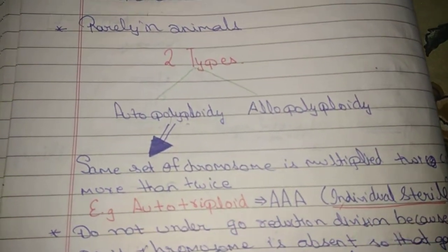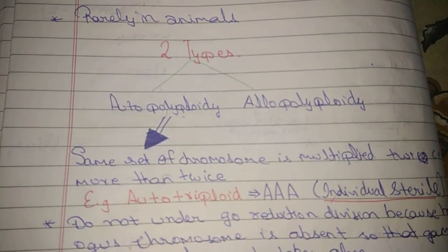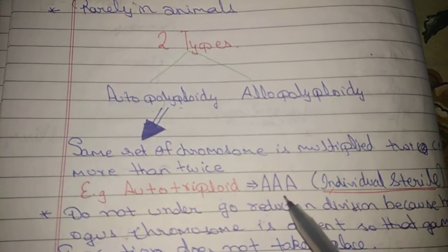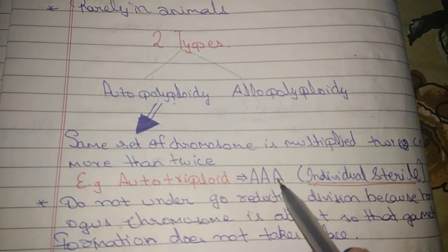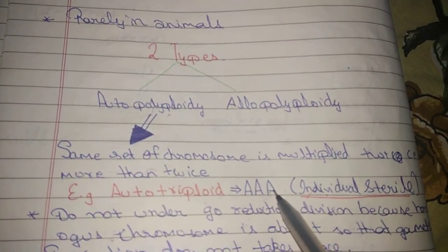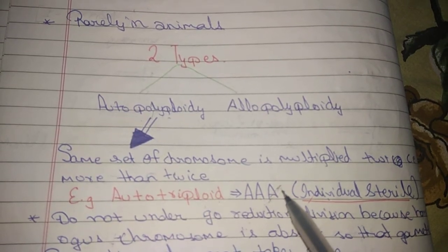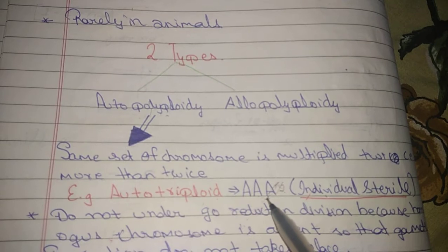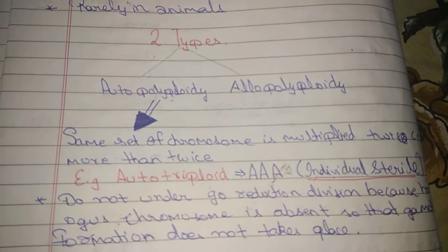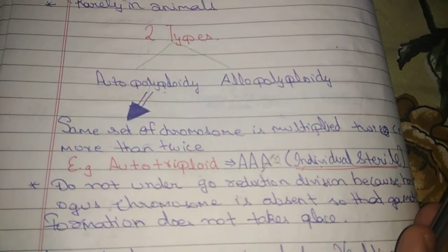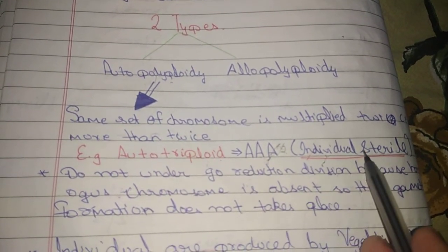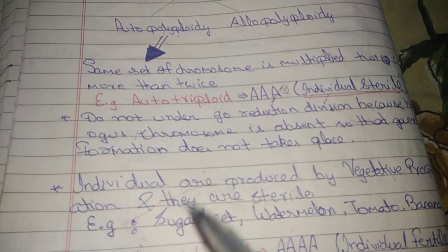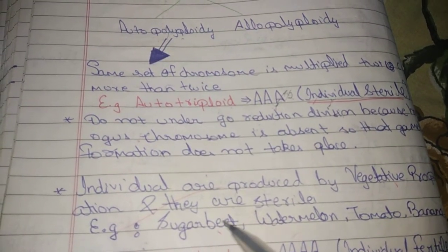For example, auto triploid means the same set of chromosomes multiplied to give AAA. These individuals are sterile because homologous chromosomes are absent, so meiotic division does not occur, meaning no gamete formation takes place and the individuals are sterile. Examples include sugar beet and tomato.